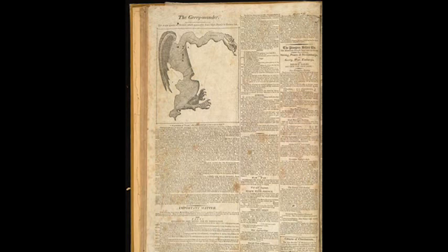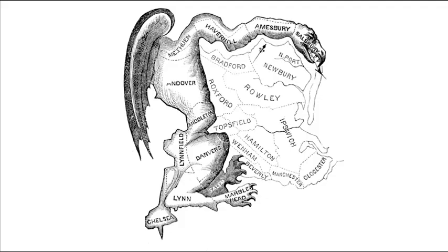Six weeks later, on 26 March, the Boston Gazette published a picture which portrayed a map of the New Essex South District as a monstrous salamander with teeth and claws.